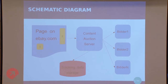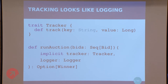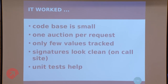Tracking — in case someone isn't familiar — is just collecting pieces of important information about the auction: like who participated, who won, what price, things like that. Originally, we looked at tracking the same way you usually look at logging. As someone said, it's a practical, pure thing. So you can see an example here: runAuction takes the bids and also takes an implicit tracker alongside the logger, because they look the same, and returns some Option winner. The tracker is pretty much a bunch of track methods returning Unit. It kind of worked when the codebase was small — a new project with just one auction per request and only a few values to track.